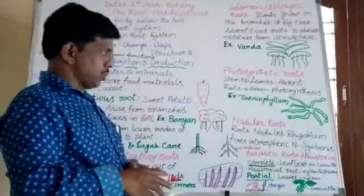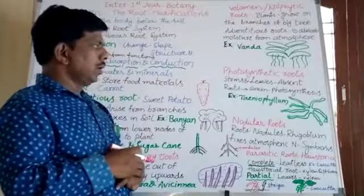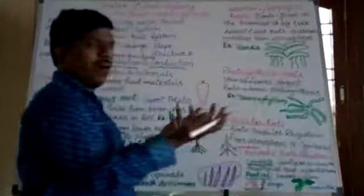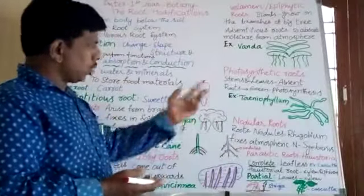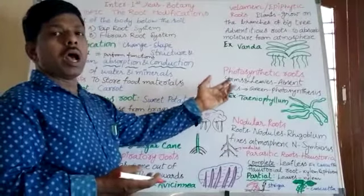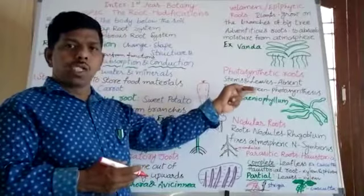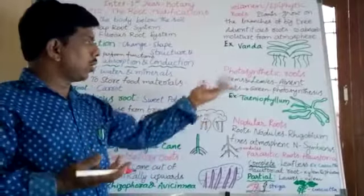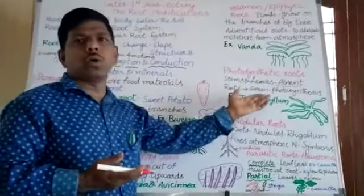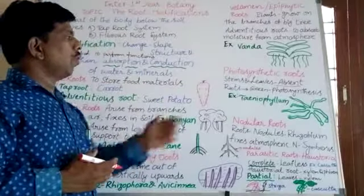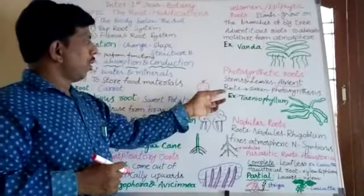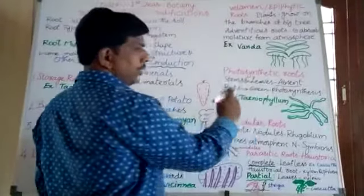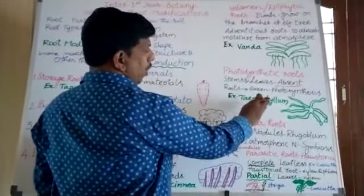Next are photosynthetic roots. In these plants, stems and leaves are completely absent, so there is no possibility of photosynthesis through leaves. Instead, the roots are green in color and are able to perform the function of photosynthesis. For example, Taeniophyllum.